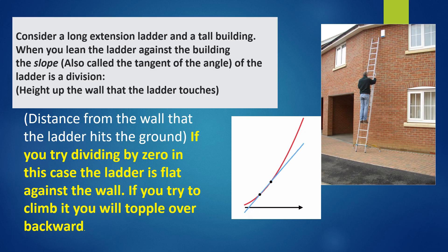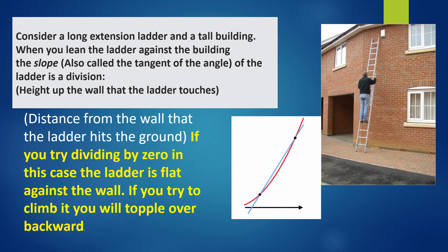Let's consider one more real life situation using trigonometry as an example. When we place a ladder against a tall building, if you try dividing by zero in this case, the ladder would be flat against the wall. When you climb, you will definitely topple over backwards. So when you try to divide by zero, it will definitely collapse.